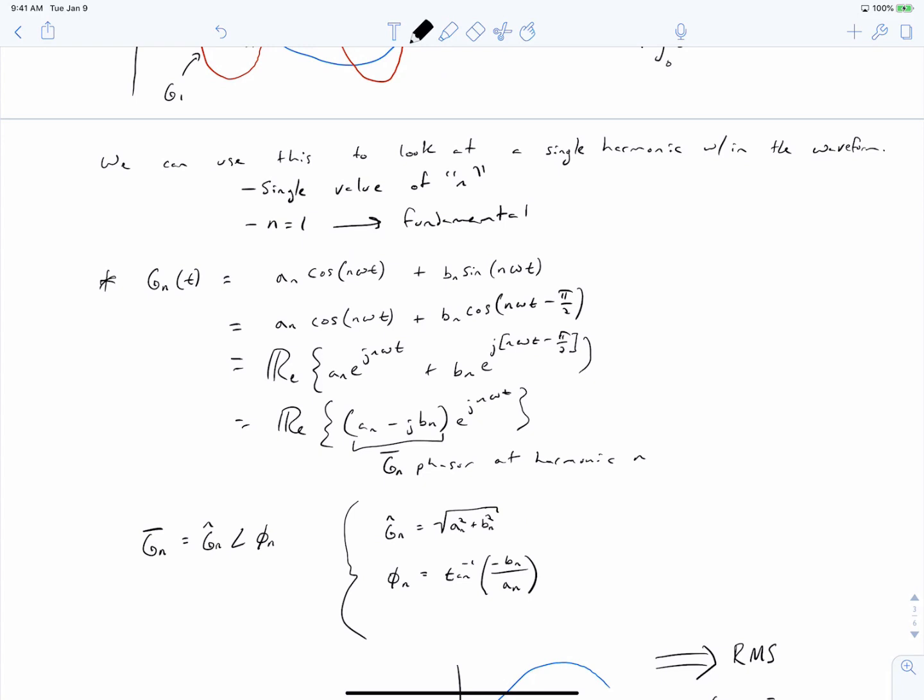And this phasor, again, clearly has a magnitude and an angle. So you can plot this. You can say that G of N consists of a component A of N that is on the real axis, so this is A of N, and a component that's negative J B of N. So when we get our final phasor, it looks like this. It has a magnitude of G hat and it's got an angle of phi.